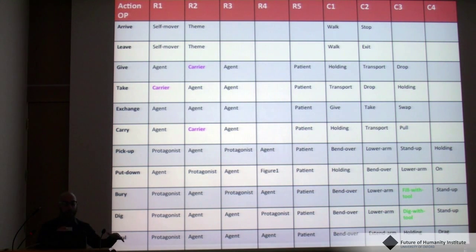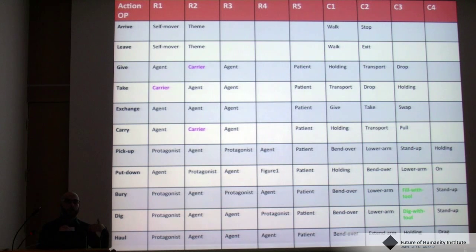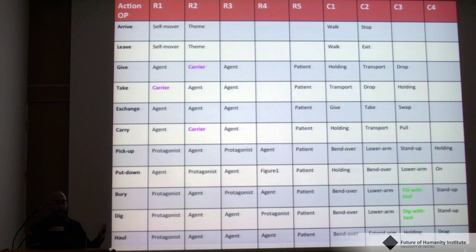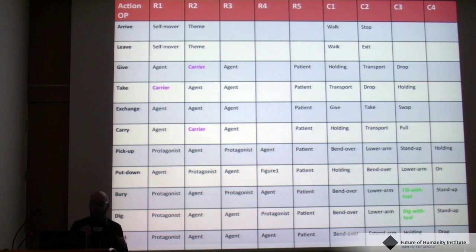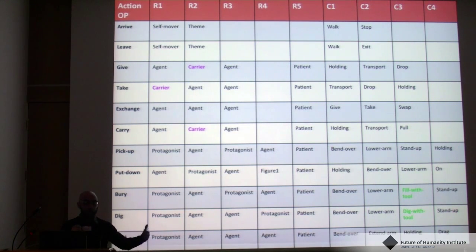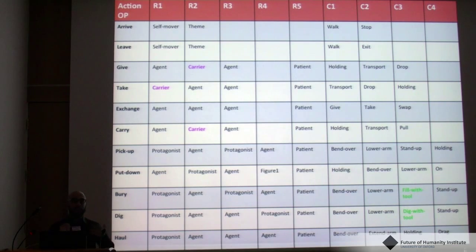On the left you have the action types; R1 to R5 are semantic roles, and C1 to C4 are basic components of actions. For example, ARRIVE is composed of WALK and STOP: for WALK, the agent plays the role of self-mover, and when it stops it is a theme in terms of frame semantics.